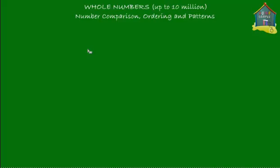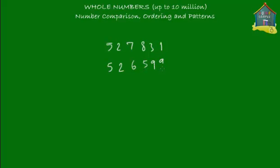Let me take one more example with bigger numbers. We have four six-digit numbers: 527831, 526599, 683127, and 412113. We've been asked to compare them and find which is the smallest and which is the biggest, and then see what else we can do with them. Let's first find out which one is the biggest.